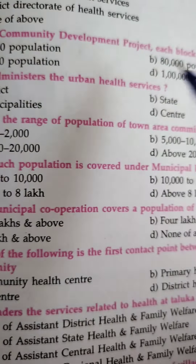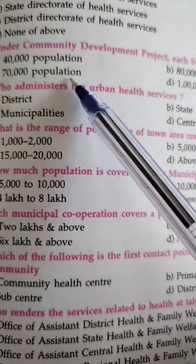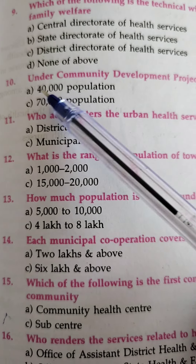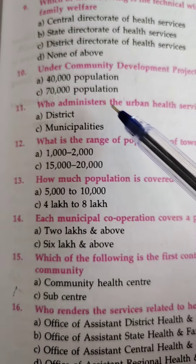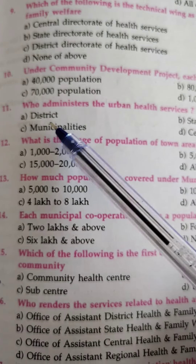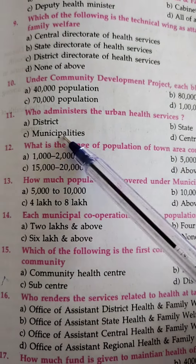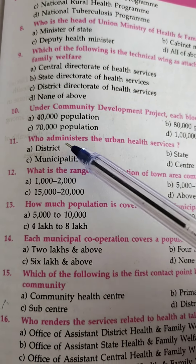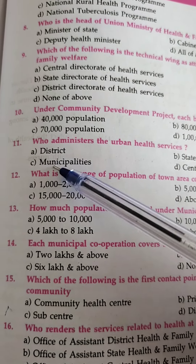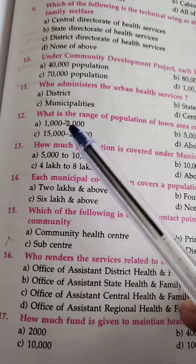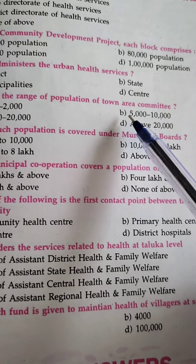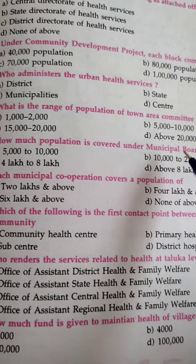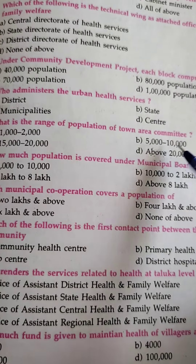Under the Community Development Project, each block comprises — options: 40,000 population, 80,000 population, 70,000 population, 1,00,000 population. Regarding urban health services: municipal parties administer urban health service. Population categories are 1,000 to 2,000; 5,000 to 10,000; 15,000 to 20,000; and above 20,000 — the answer concerned is 5,000 to 10,000.